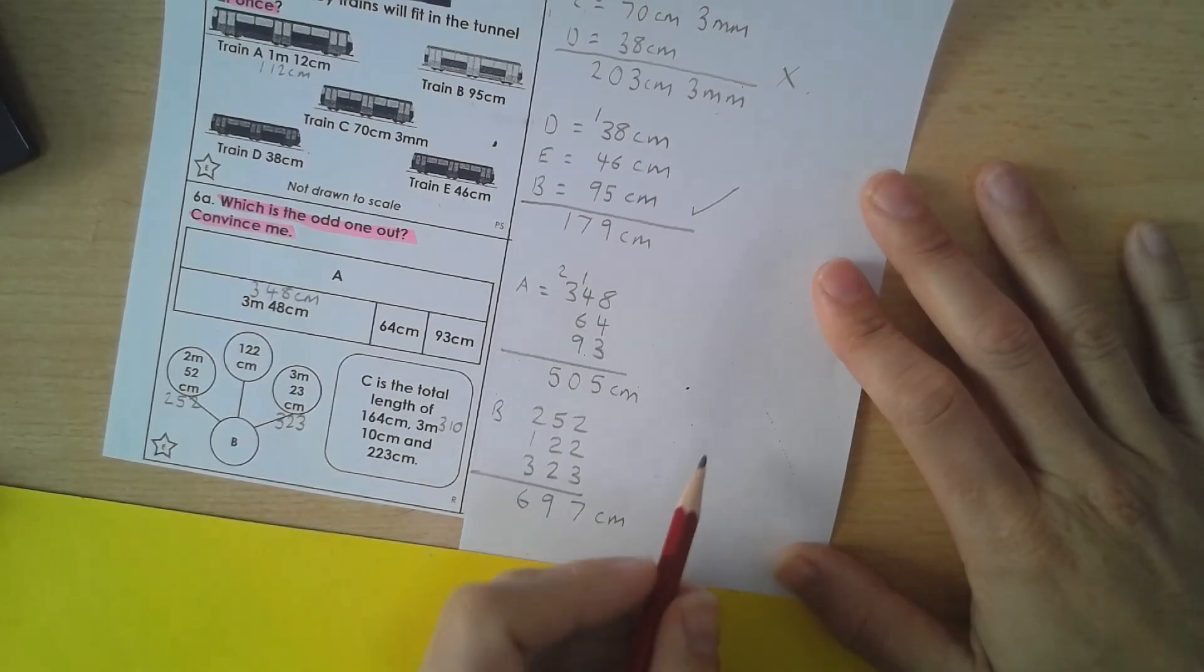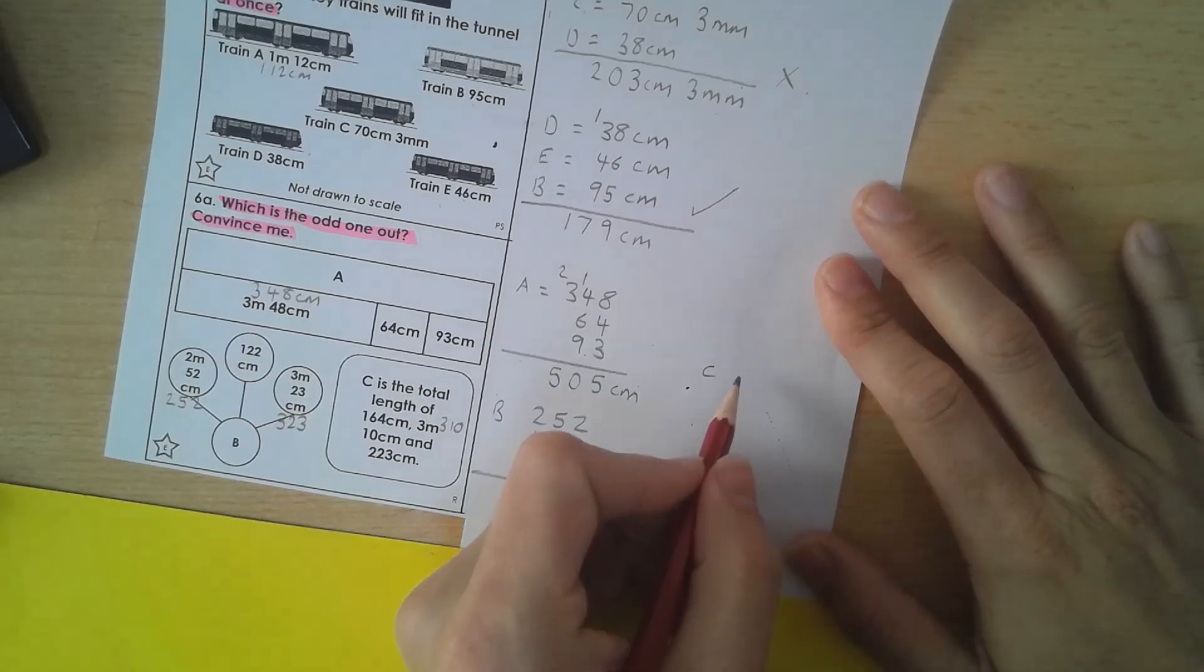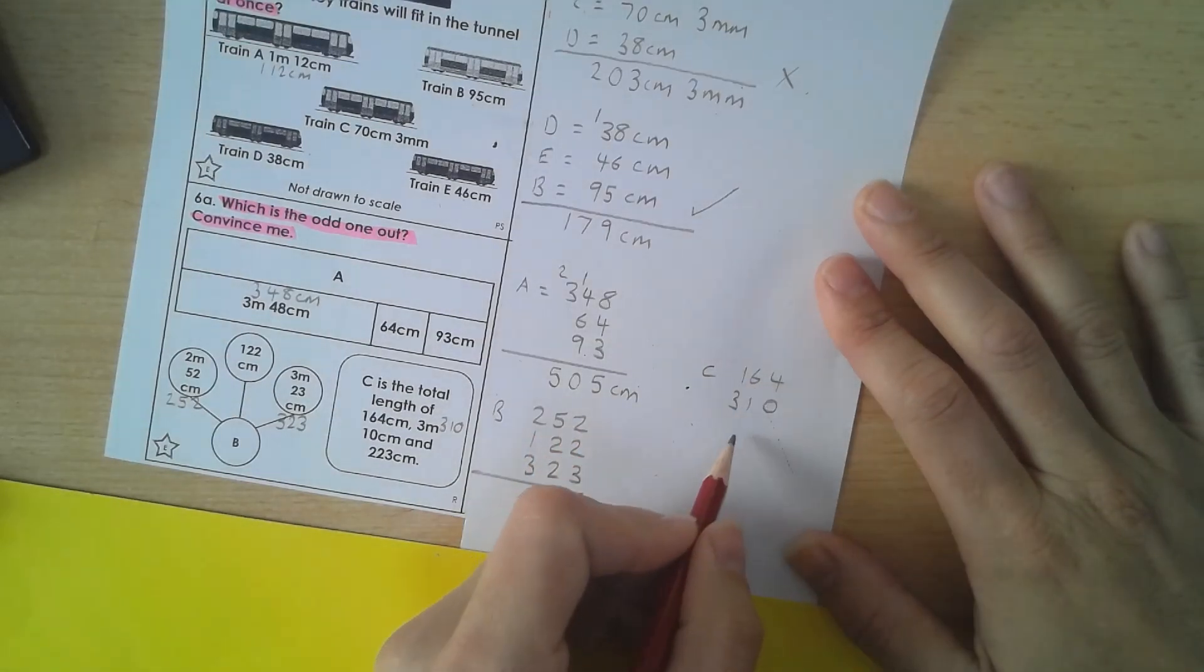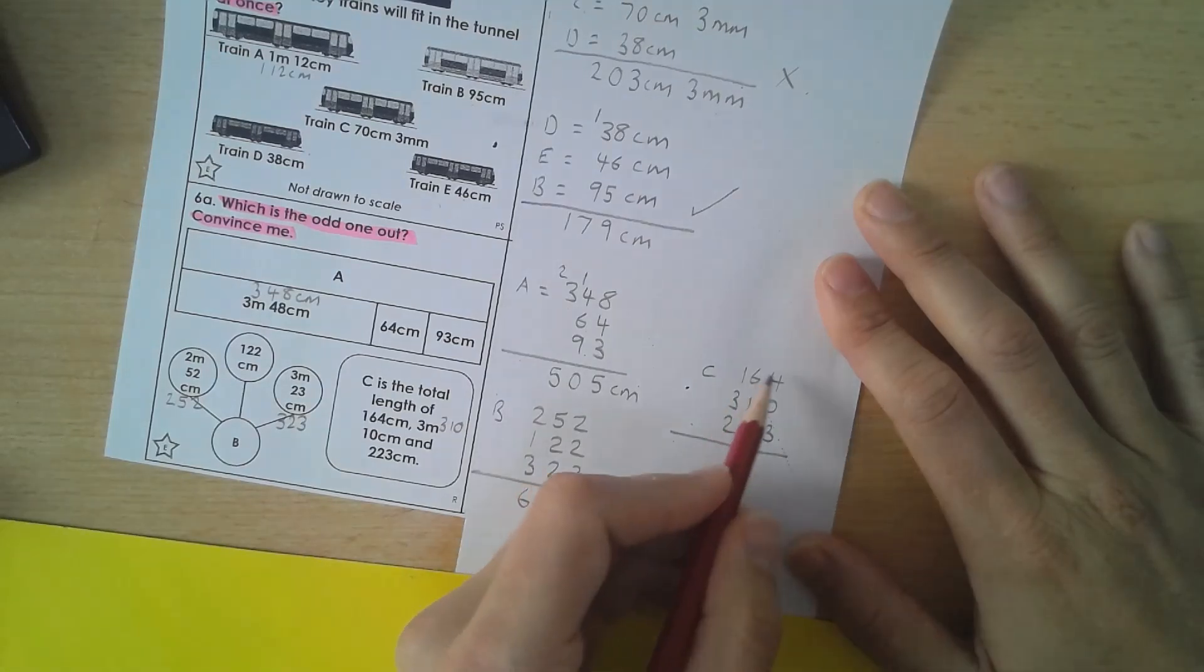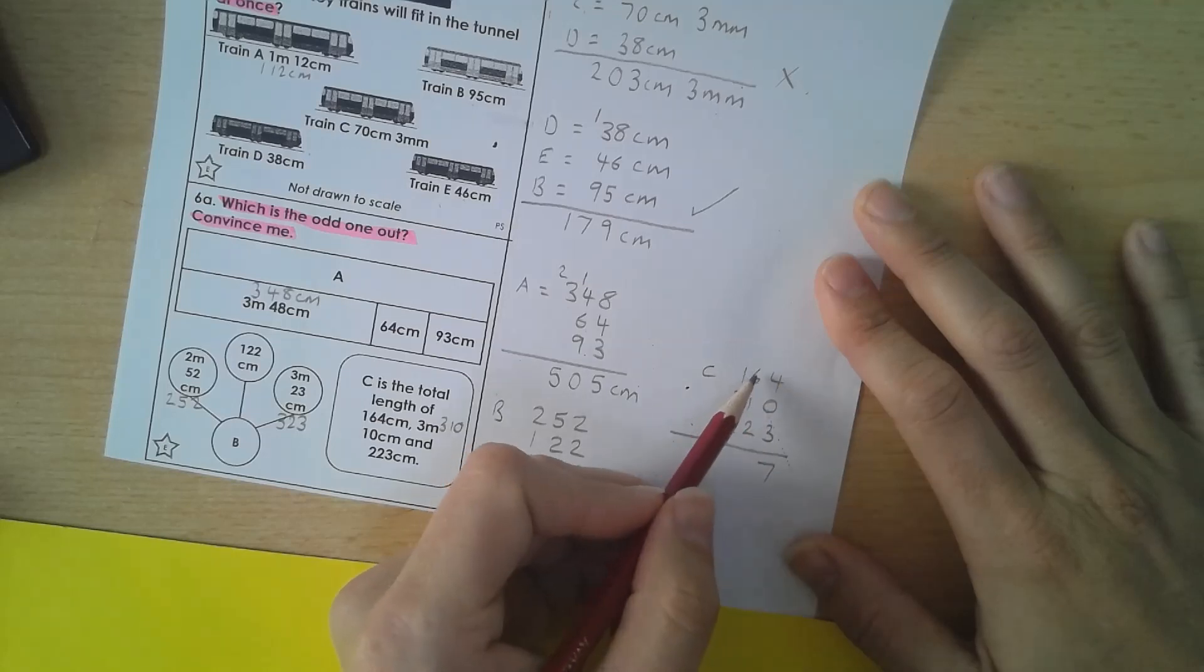And finally C, we've got 164, 310, 223. So again, we've got 7, 4 and 3, 7, 6, and 1 is 7, 8, 9. And here 1 and 3 is 4, 5, 5, 6, 697.